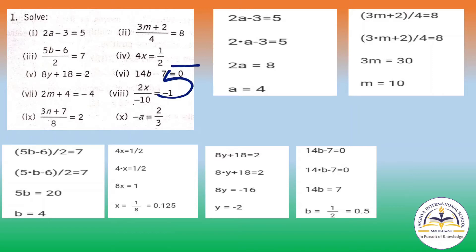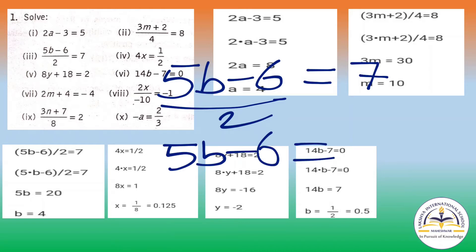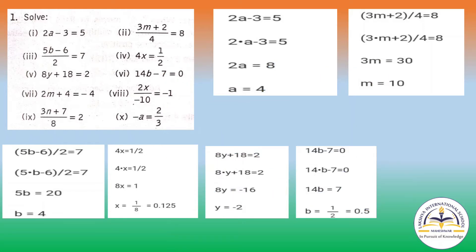So (5b minus 6) by 2 equals to 7. We will write 5b minus 6 as it is, and we will first multiply 7 and 2 to get 14. Then 5b equals to 14 plus 6, which means 20. So b equals to 20 by 5, you will get 4. This will be the answer.